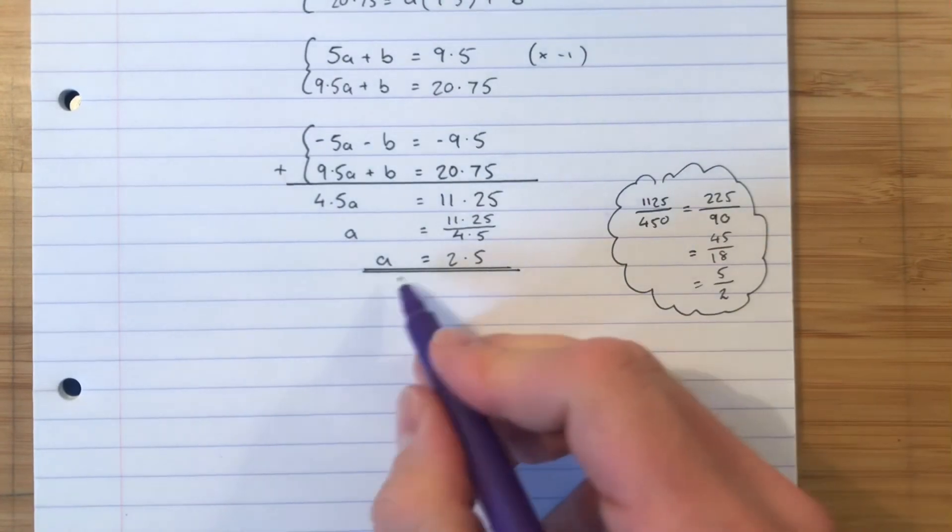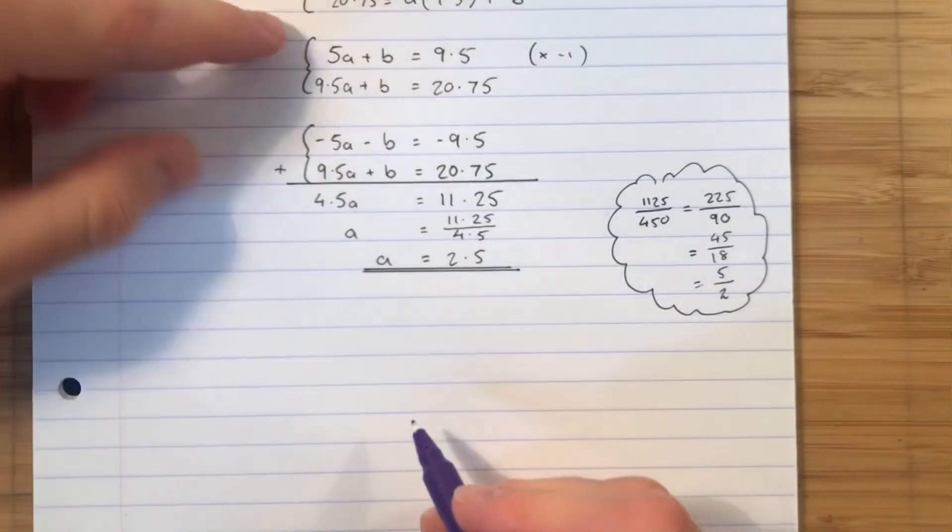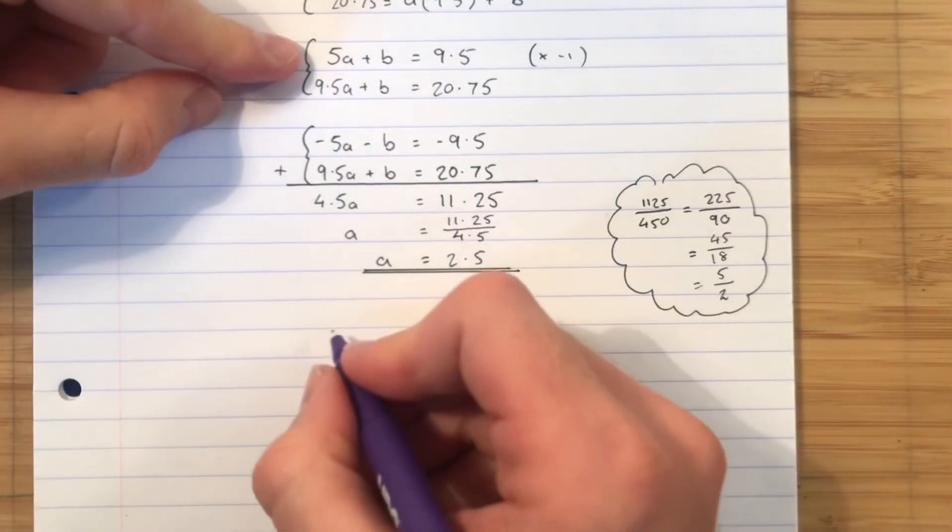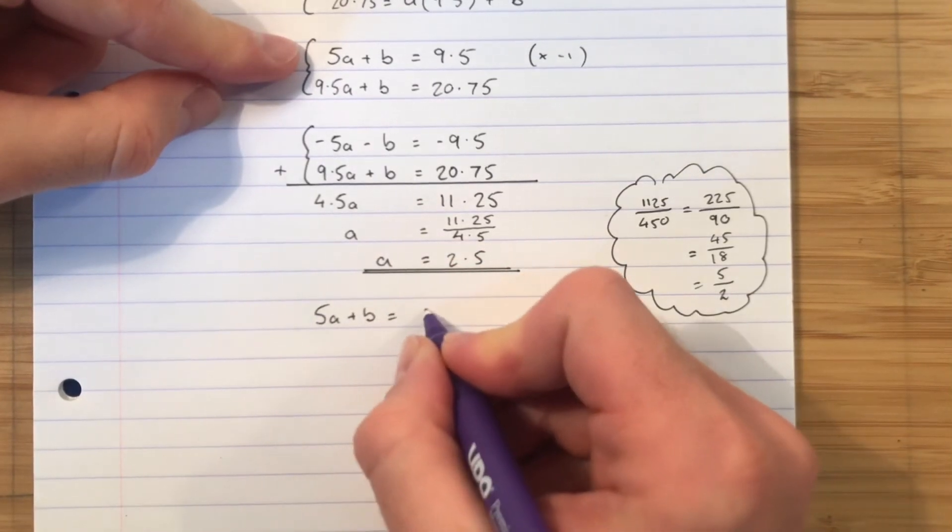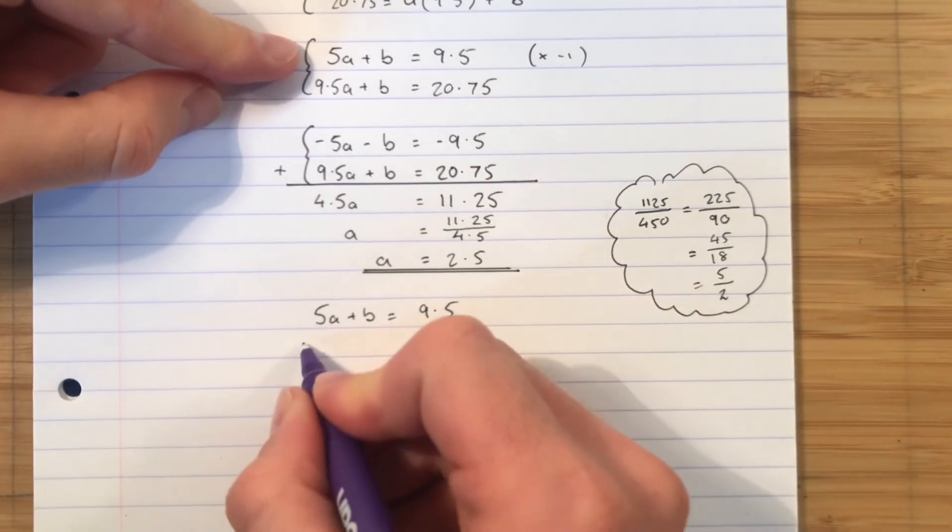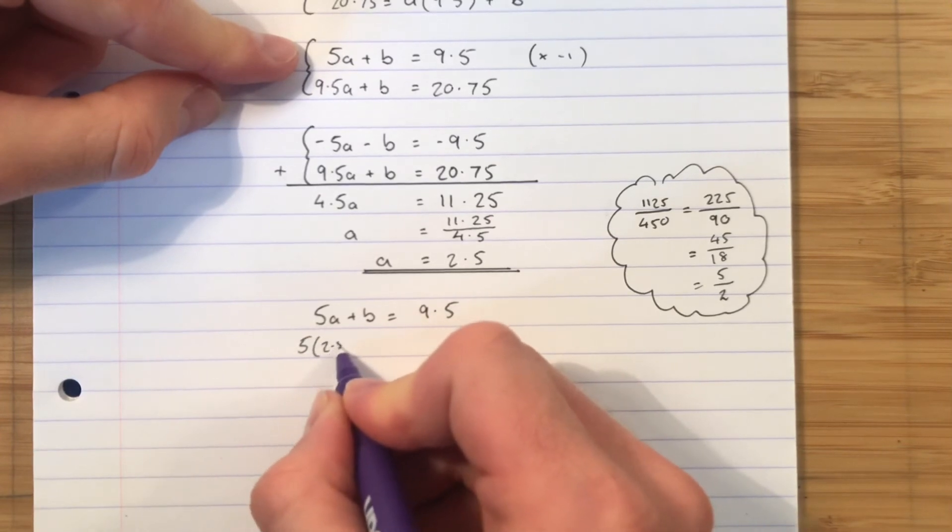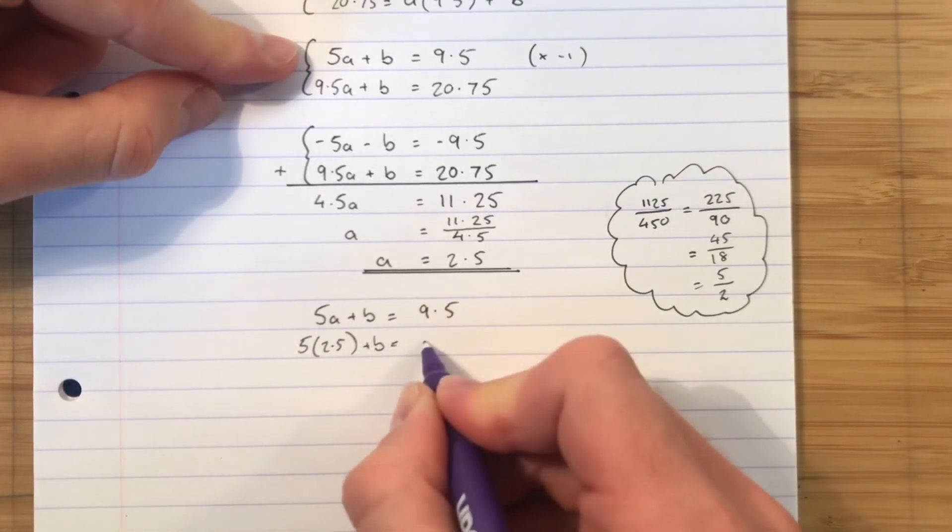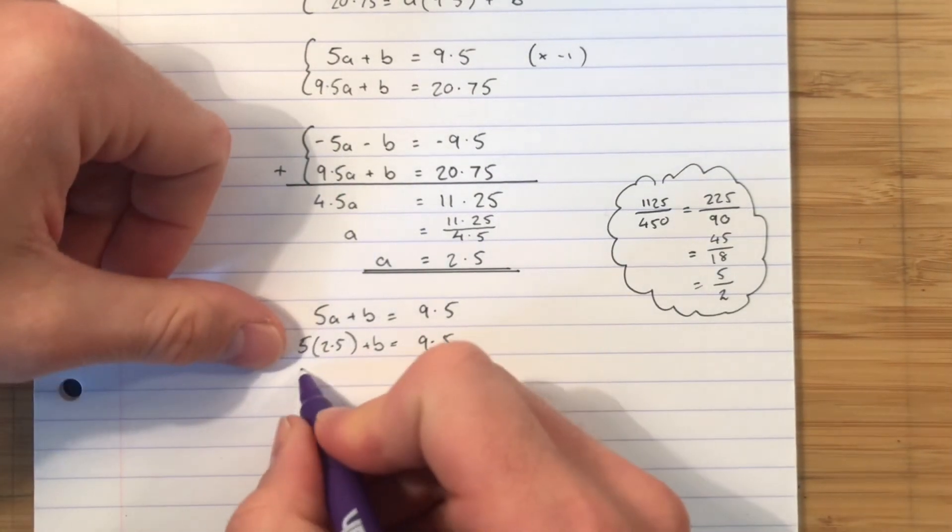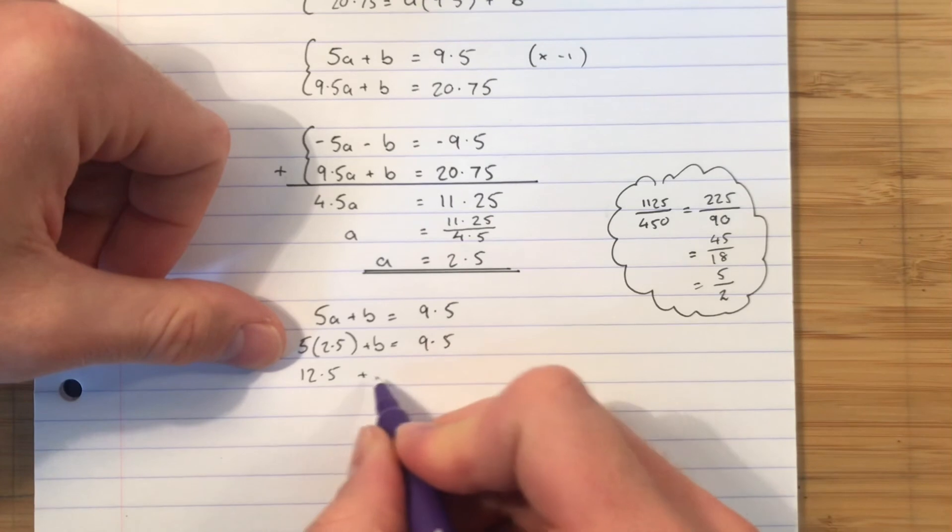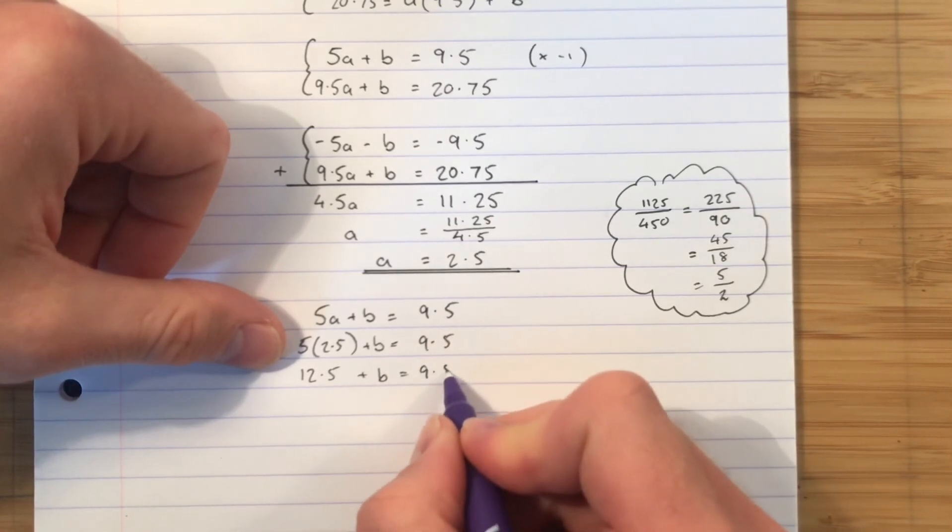To get part B, as we know, for simultaneous equations, we're just subbing back in. So let's sub back into this one here. 5A add B equals 9.5. 5 times 2.5 becomes 5 times 2.5 because we now know A is 2.5. Add B equals 9.5. 5 times 2.5 is obviously 12.5. Add B equals 9.5.